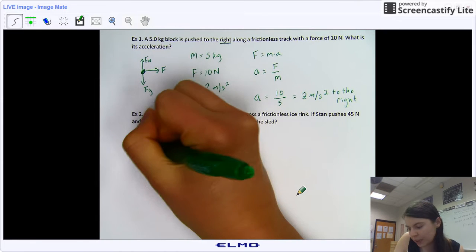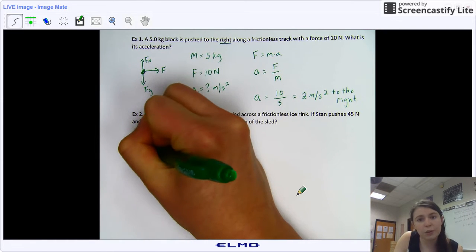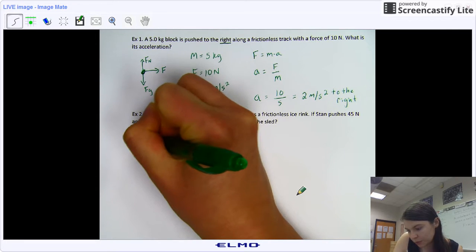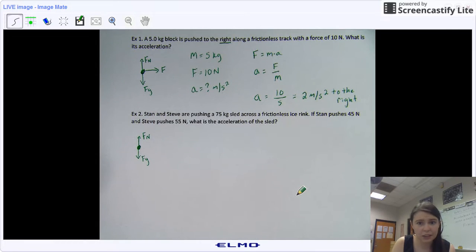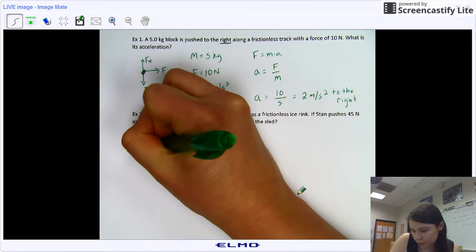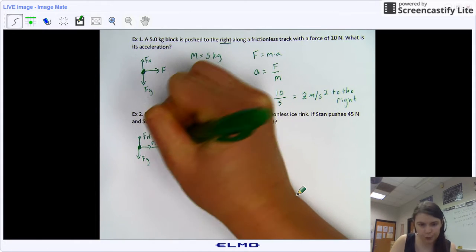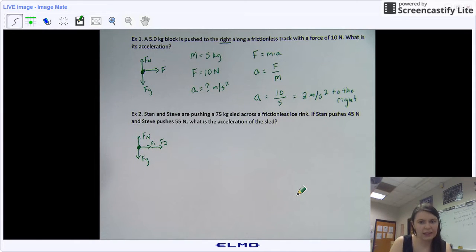So we're going to draw that free body diagram. We know that we're on an ice rink, so we're going to have some sort of force of gravity, some sort of force of normal. They'll cancel out, as they did in example one. But now we have two forces. We're going to have force of one and force of two, and you can draw them just like that. It indicates that they're going to add together.